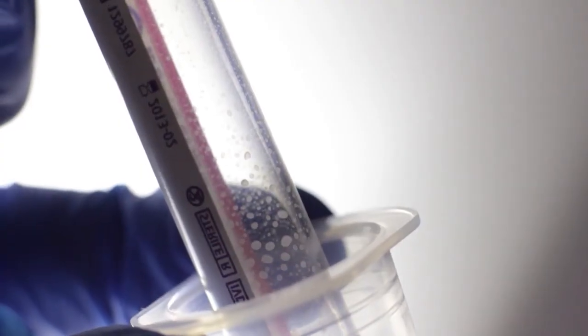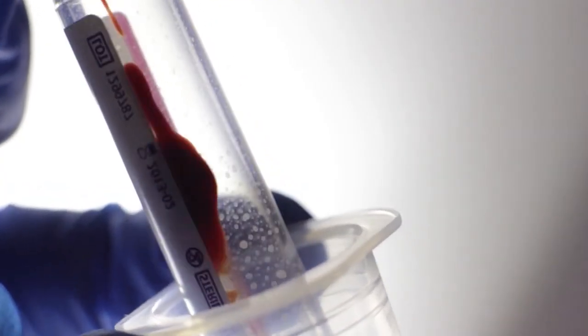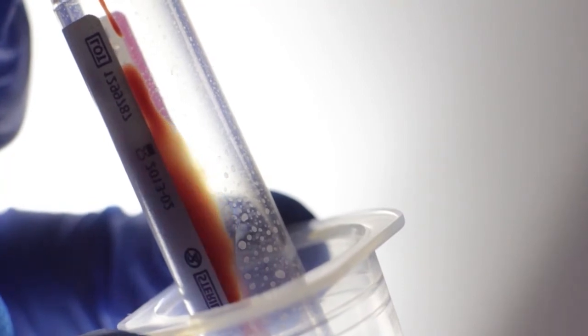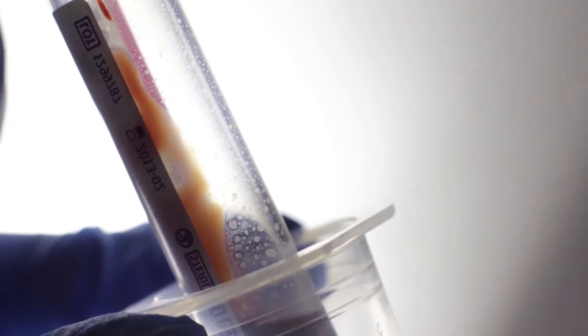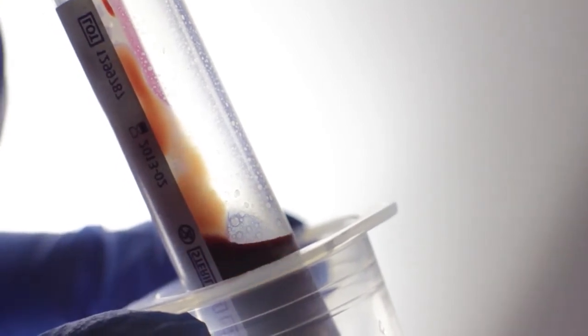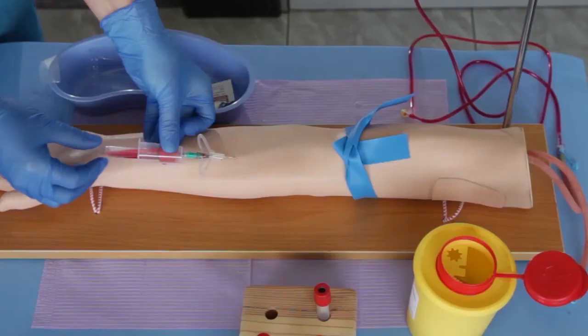While supporting the vacutainer tube holder, push the vacutainer tube into the hub and check for blood flow. Allow the tube to fill, then remove it from the tube holder, all the time gently supporting the tube holder to prevent the needle from slipping out of the vein.